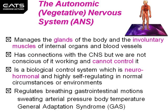The autonomic — or you can think automatic — nervous system, an old term being vegetative, manages the glands in the body and the involuntary muscles of internal organs and blood vessels. It has connections with the central nervous system, but we are not conscious of it working and generally we cannot control it. It is a biological control system which is neurohormonal and highly self-regulating in normal circumstances. It regulates breathing, gastrointestinal motions, sweating, arterial blood pressure, and body temperature. In stress reactions, it can be activated as part of the general adaptation syndrome.